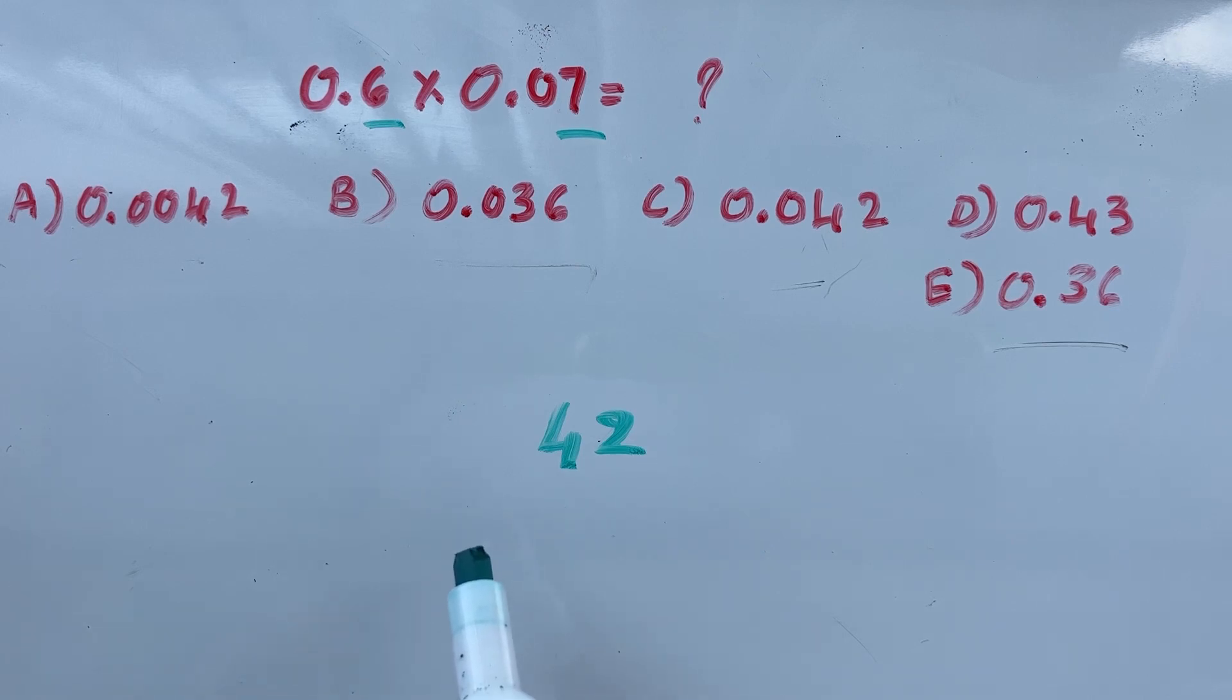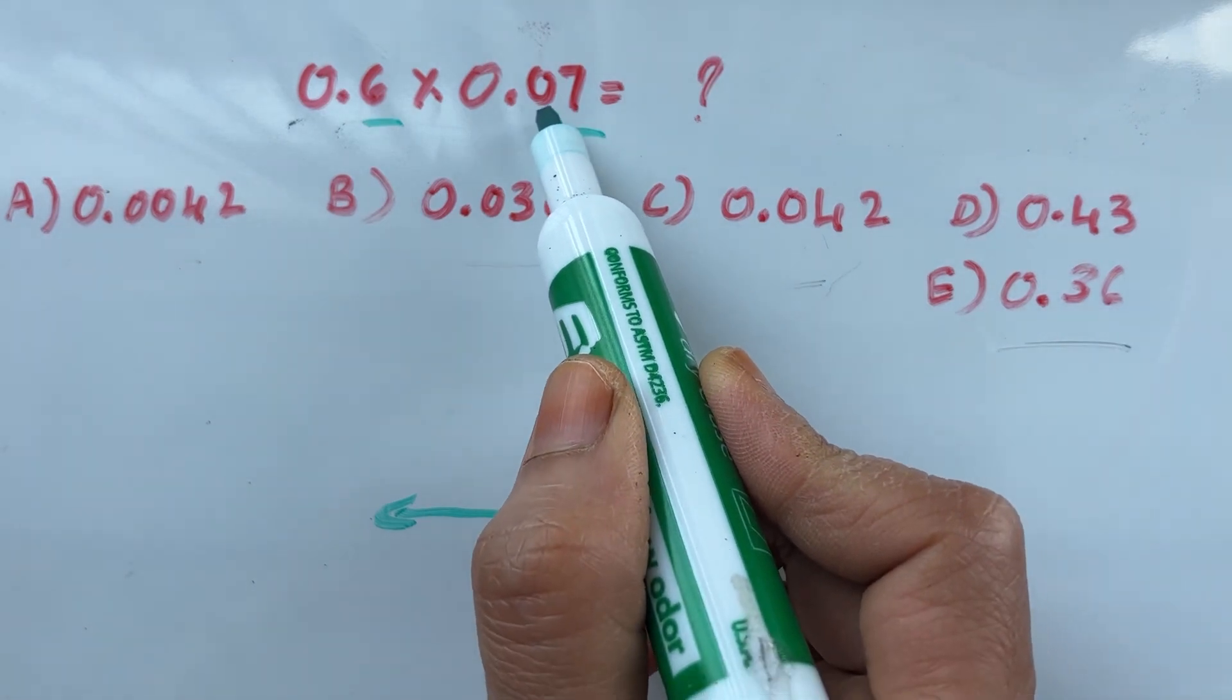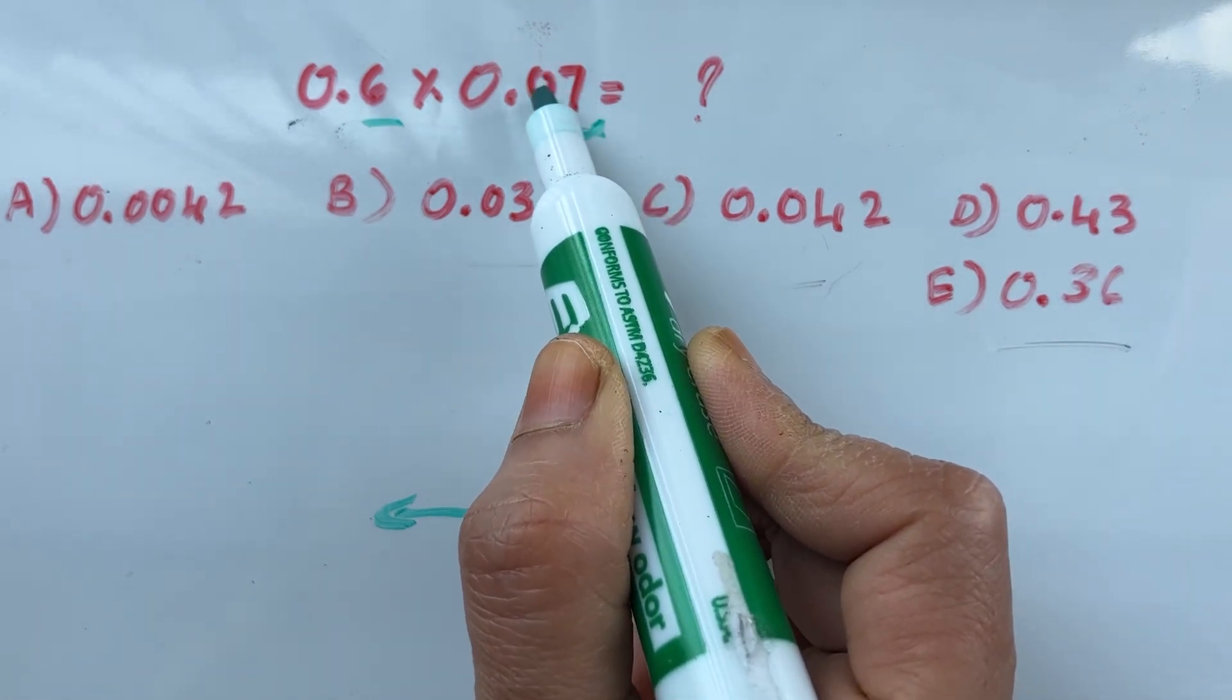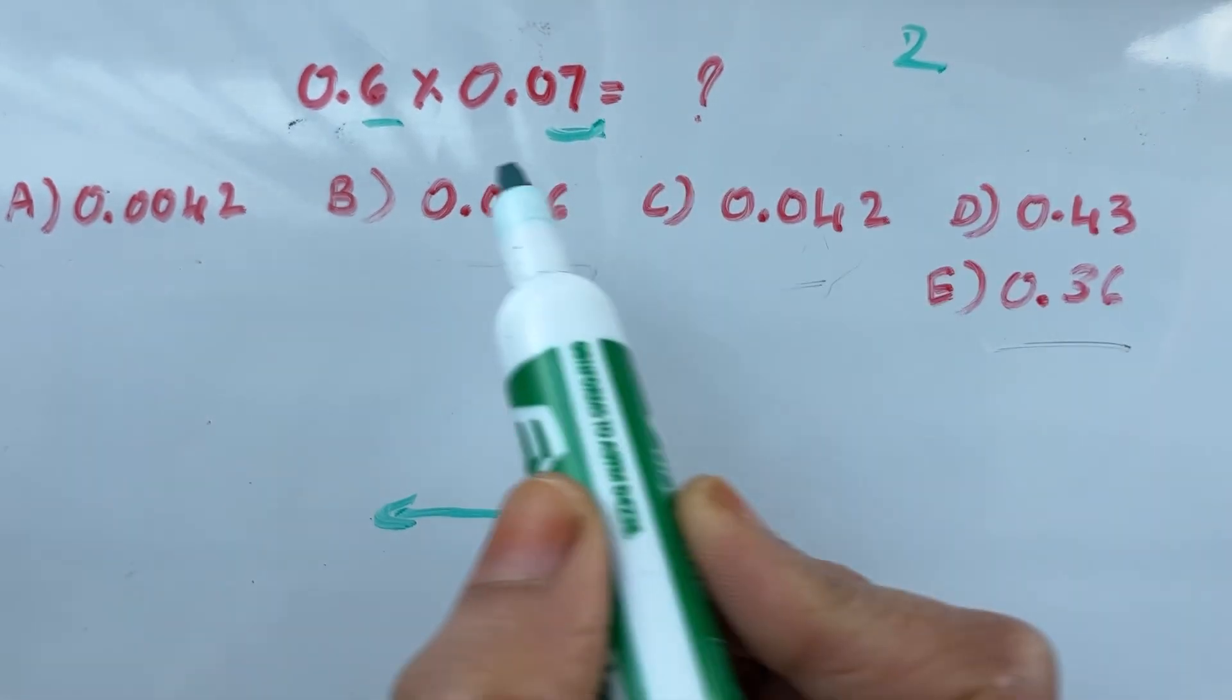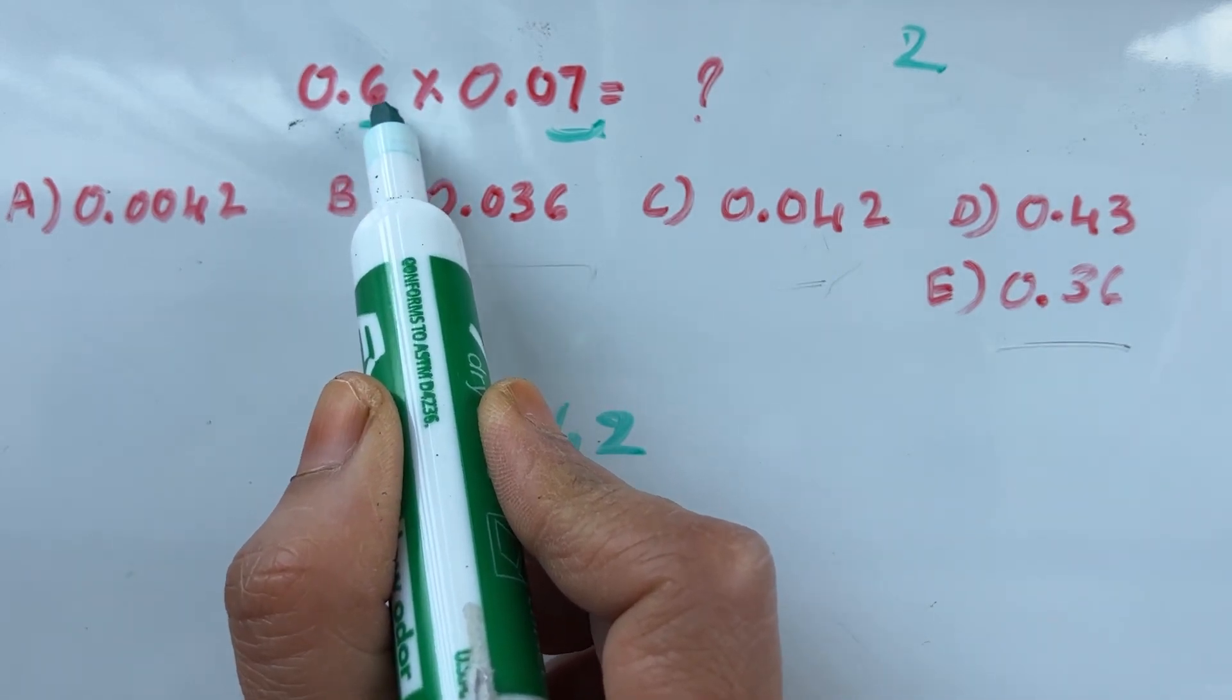Now you have to look from right to left. How many digits are here after the decimal point? One, two. How many digits are here after the decimal point? Only one.